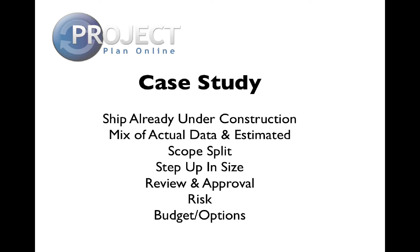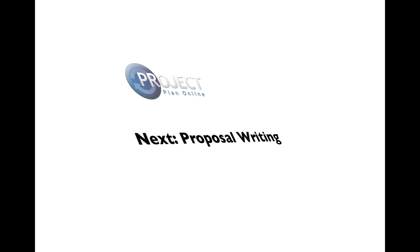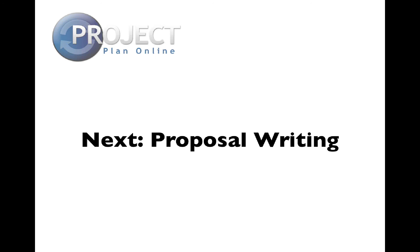As for the case study, an almost identical ship was under construction in Spain as we bid this project. There were a mixture of actual and estimated quantities available from our partner, so the greater concentration was on the changed construction strategy of building and integrating the superstructure in Australia, and the logistics of transporting and accommodating such a large ship in Australia. We relied heavily on our historic data from other ship construction projects, but the unknown was how this would translate to the increased size of this vessel, and this was addressed through our risk management and review and approval processes. In the next and final video of this bid management case study, we'll look at proposal writing. Thank you.